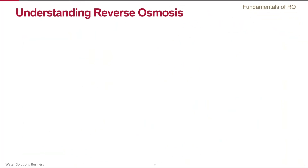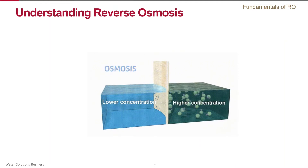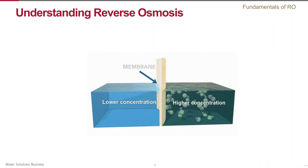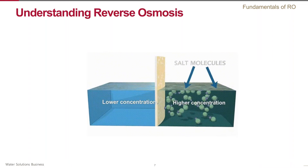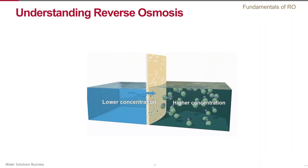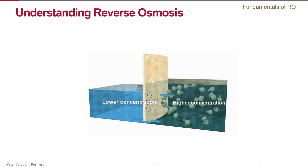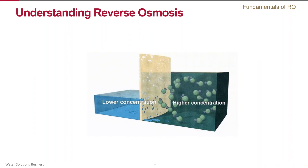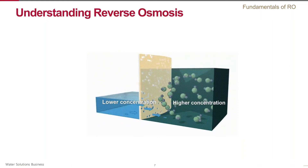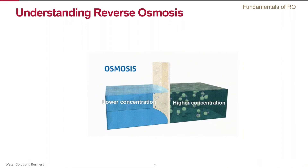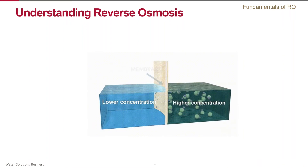To understand how reverse osmosis works, it is first necessary to understand the process of osmosis. Consider a container divided by a semipermeable membrane — one compartment has a solution with a high concentration of dissolved solids, while the other has a solution with a low concentration. The membrane allows water to pass through it but is impermeable to most dissolved solids. Osmosis is the natural process where water flows from the low-concentration compartment to the high-concentration compartment.